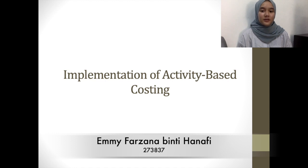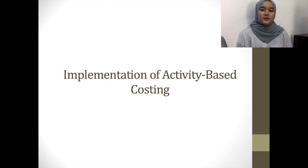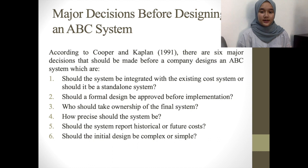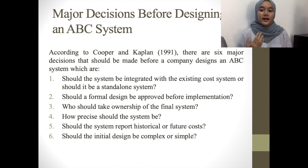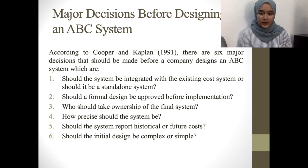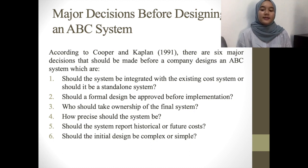My name is Emy Farzan Abiti Hanafi and my matrix number is 273837. Today I will be presenting about the implementation of Activity-Based Costing. Before you design an ABC system, there are six decisions you should decide first. According to Cooper and Kaplan, those six decisions are: should the system be integrated with the existing cost system or be a standalone system; should a formal design be approved before implementation; who should take ownership of the final system; how precise should the system be; should the system report historical or future costs; and should the initial design be complex or simple?